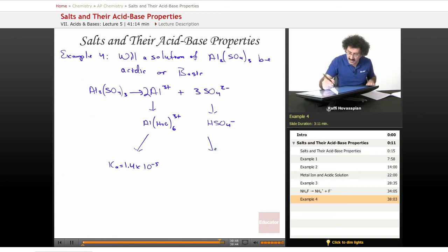And we want to know the Kb of this. The Kb is 10 to the minus 14 over the Ka of this, which is 1.2 times 10 to the negative 6.